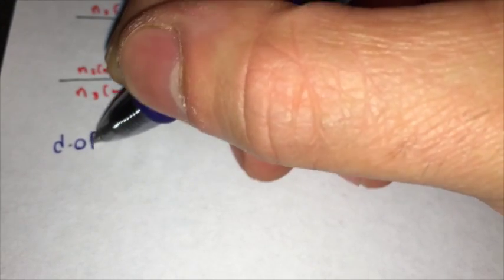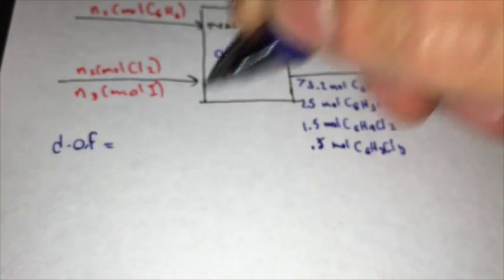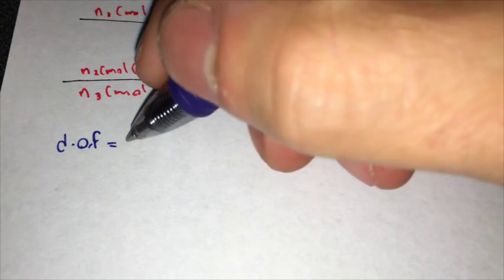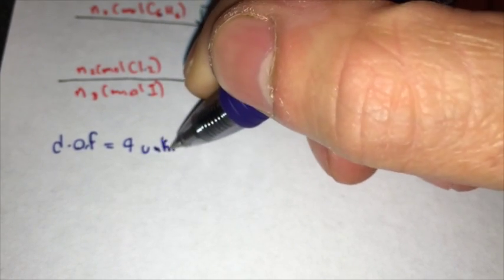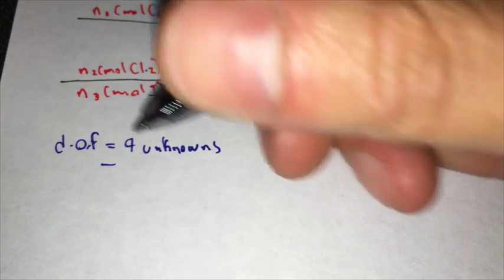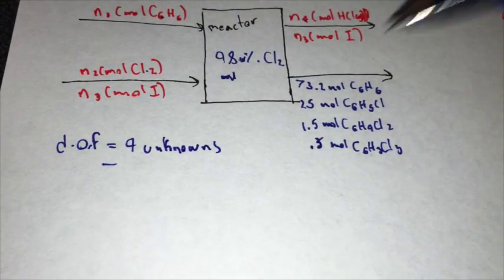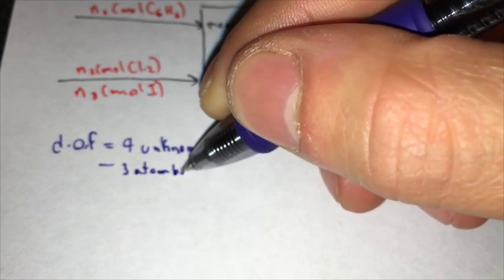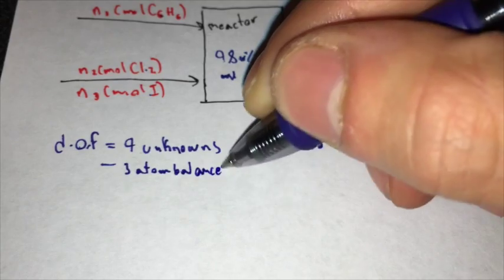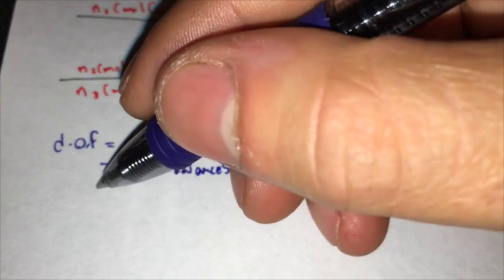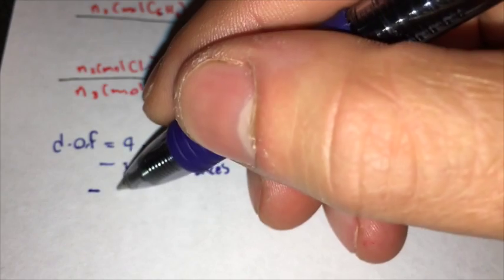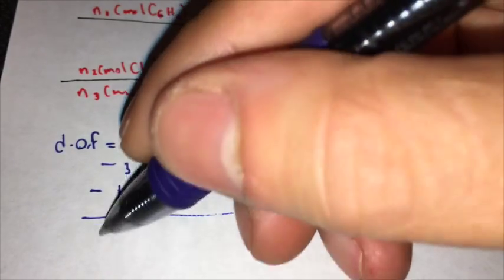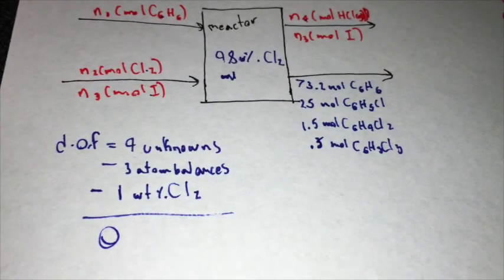Degrees of freedom, which in this case would be equal to four unknowns, so four unknowns, minus three atomic balances, and minus one weight percent of C6H6 in the feed. That would be equal to zero. So that means that our problem is solvable.